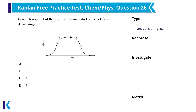The answer choices for question 26 seem to indicate numbered locations on the graph, and the question asks for the section where the magnitude of acceleration is decreasing. I want to be very careful here because kinematics graphs can be a little confusing, and this graph shows velocity versus time. The question asks for where on the graph the magnitude of acceleration is decreasing, not just for when acceleration is decreasing.